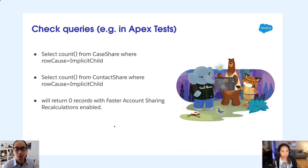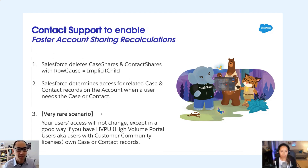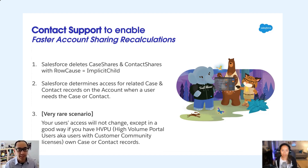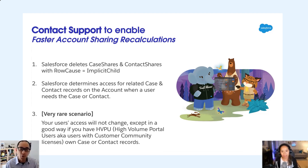You should test this in a full copy sandbox — or if you don't have a full copy, then a partial copy. The process today is to contact support. Support will let the engineering team know and they'll turn the feature on. What that does is delete the case share and contact shares where the row cause is 'implicit child.' Then there's dynamic access when your end user tries to access a record. In some cases, it actually runs faster — it really depends on whether you had a lot of parent-child data skew. Account merge will also be faster with this feature.